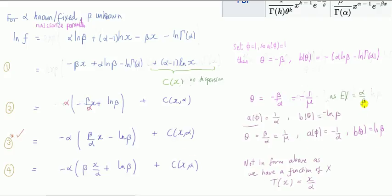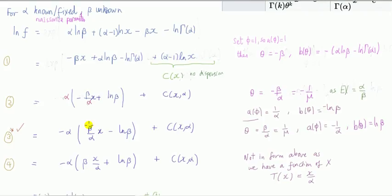You might wonder if there are other representations. Consider taking this alpha and putting it under x instead of collecting it under beta and calling that theta. Then this is not of the form of the natural exponential family as we've discussed it, because you'd have a function of x in the exponent. In that case theta is beta and the function t of x is x over alpha, which is not just x.